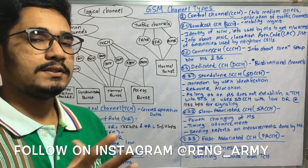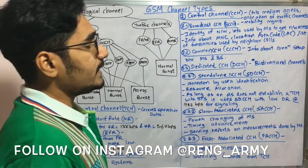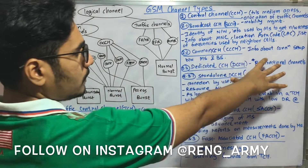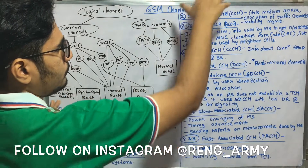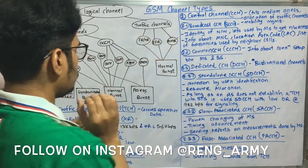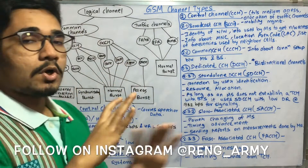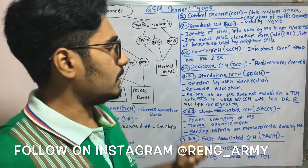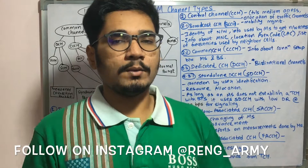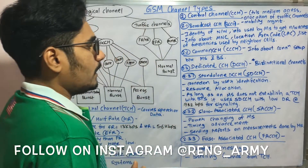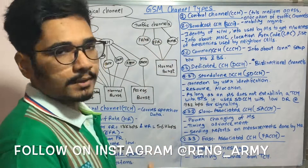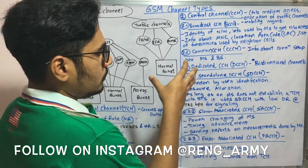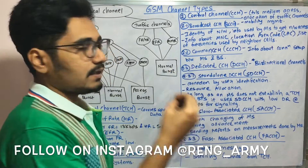The dedicated control channel (DCCH) is bi-directional, unlike the broadcast channel, common control channel, and TCH which are all unidirectional. Being bi-directional means communication can occur from both ends. DCCH has three sub-types: standalone DCCH (SDCCH), slow associated CCH (SACCH), and fast associated CCH (FACCH).